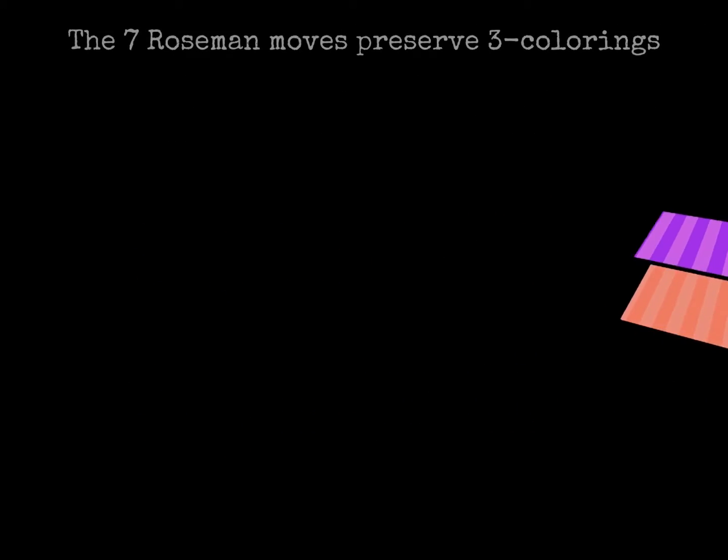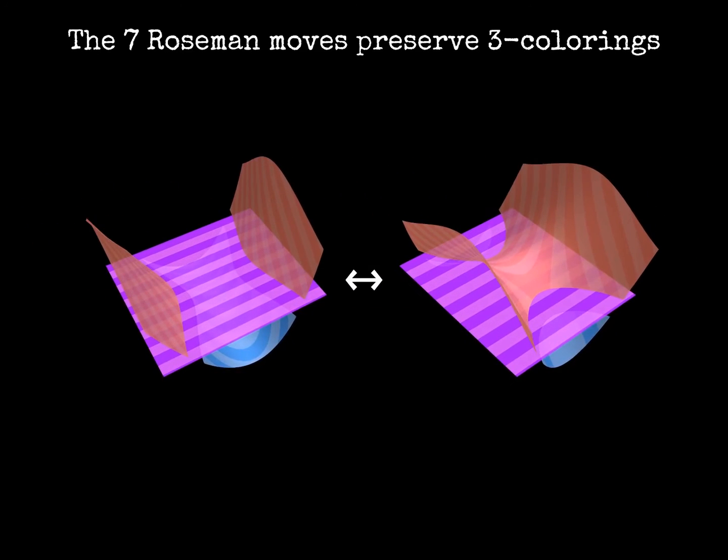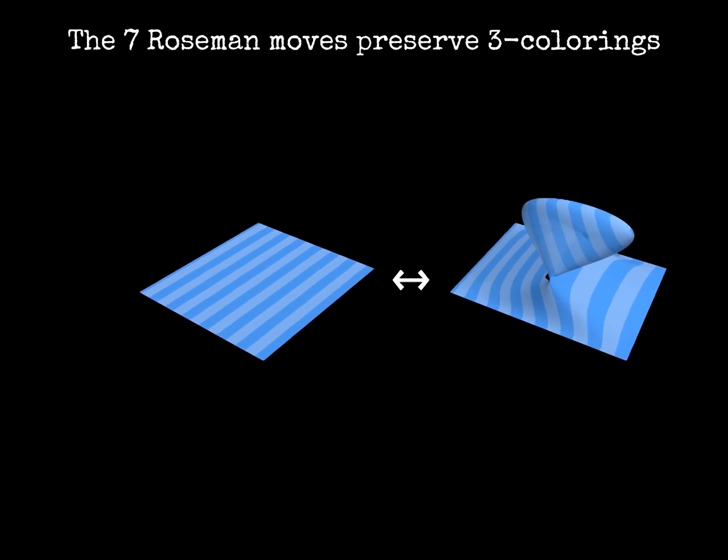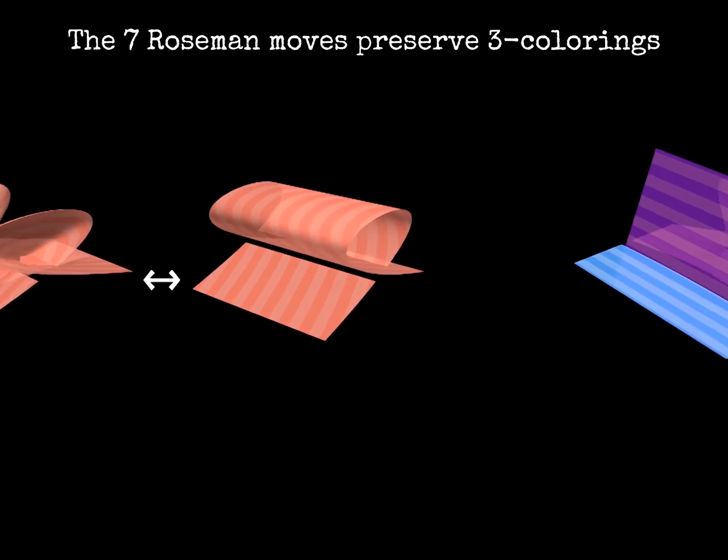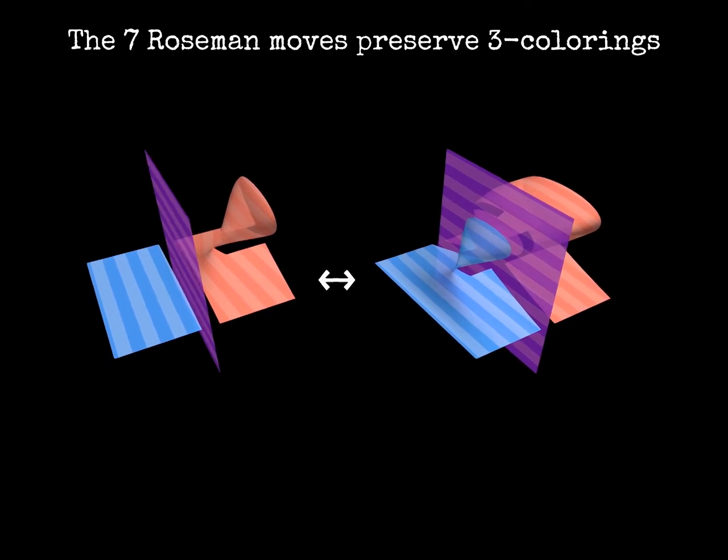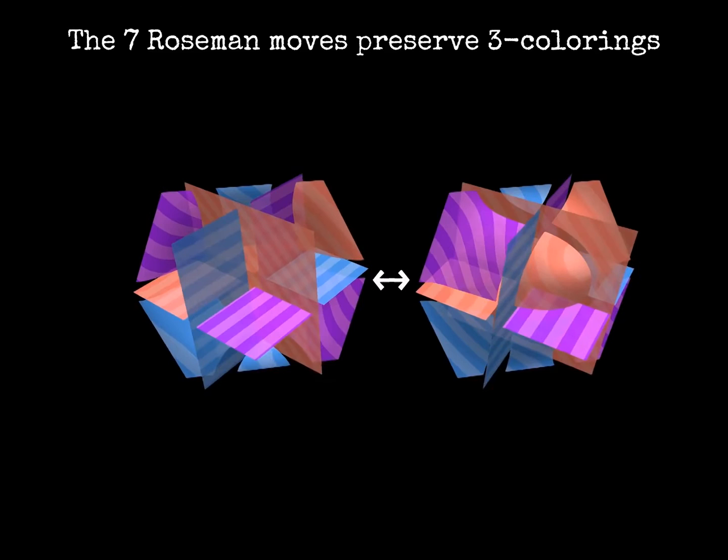A similar check can be performed on each one of the seven Rosemann moves. The number of three colorings is the same on the two sides of the moves. This number is then a property of the knotted surfaces and does not depend on the broken surface diagrams chosen to represent them.